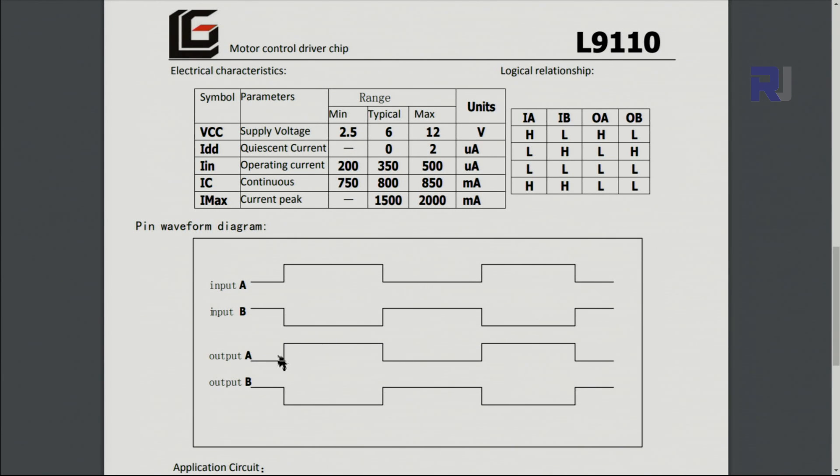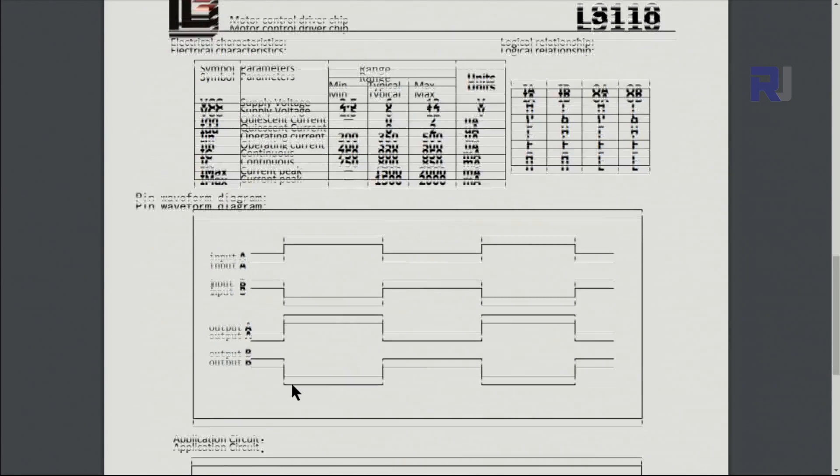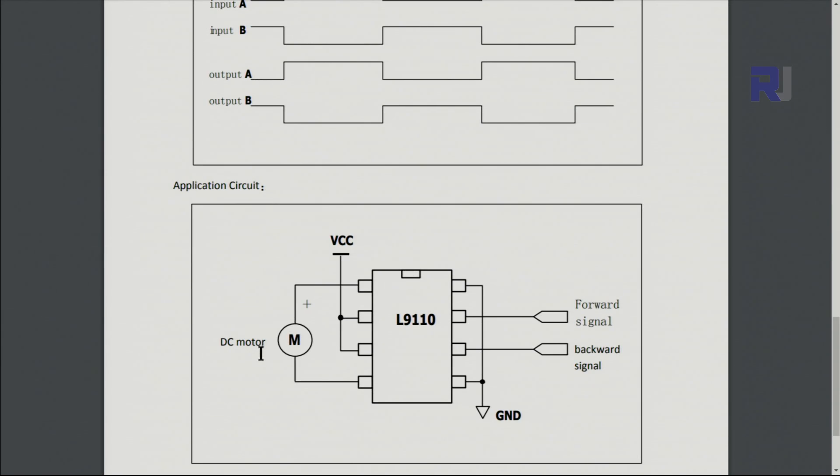Here's a diagram showing the input and output. Make sure to understand that when A is high, B is low, so they are opposite of each other. Here the chip is connected to a DC motor. In our case we have two of these, that's why we can control two motors.